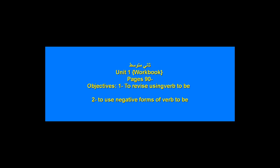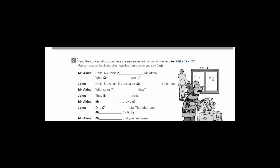So page number 90, exercise C. Read the conversation. What's the meaning of conversation? Yes, it means المحادثة. Complete the sentences with a form of the verb be - this means am, is, are. You can use contractions, meaning الاختصار. Use negative forms, meaning صيغة النفي, when you see not.